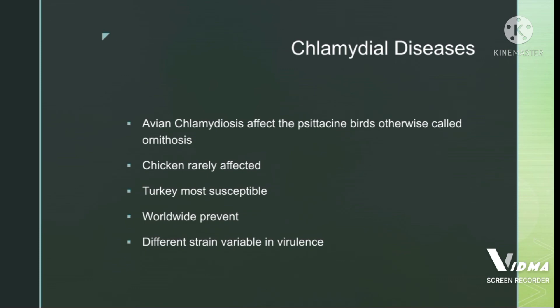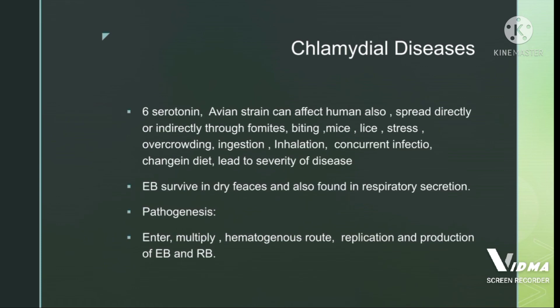Chlamydiosis causes conjunctivitis and enteritis in cattle. When it affects psittacine birds it is called psittacosis; when it affects other birds it is called ornithosis. Chickens are rarely affected. It is a worldwide prevalent disease with different strains of variable virulence; some strains can also affect humans. Spread occurs directly or indirectly through fomites, biting insects, stress, overcrowding, ingestion, inhalation, concurrent infection, and changes in diet, all of which increase disease severity.